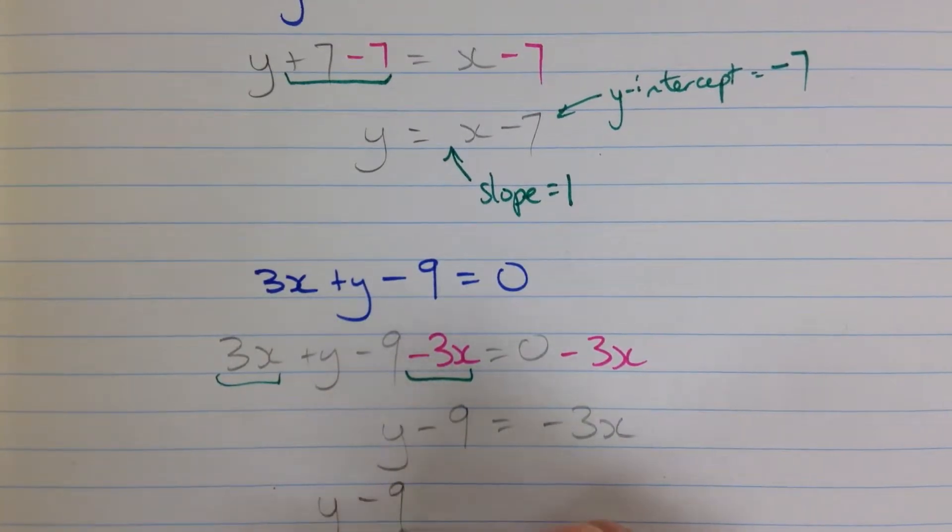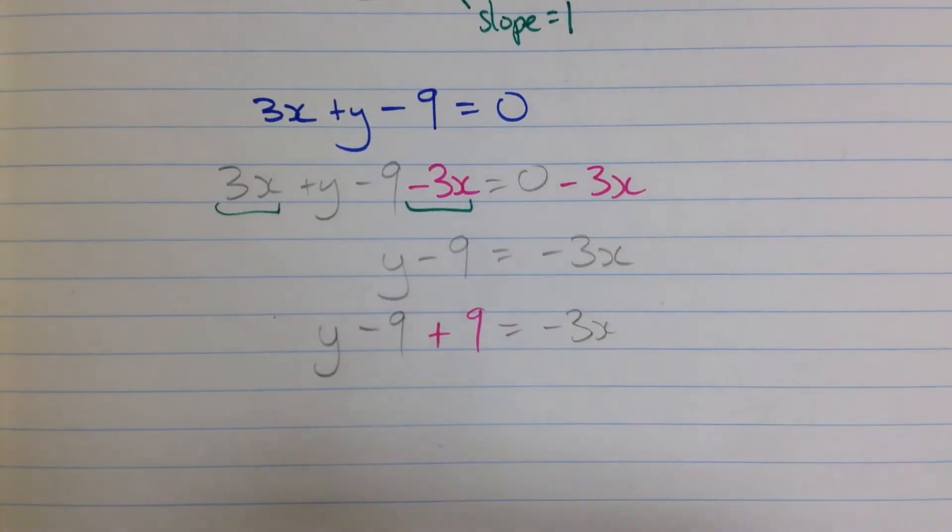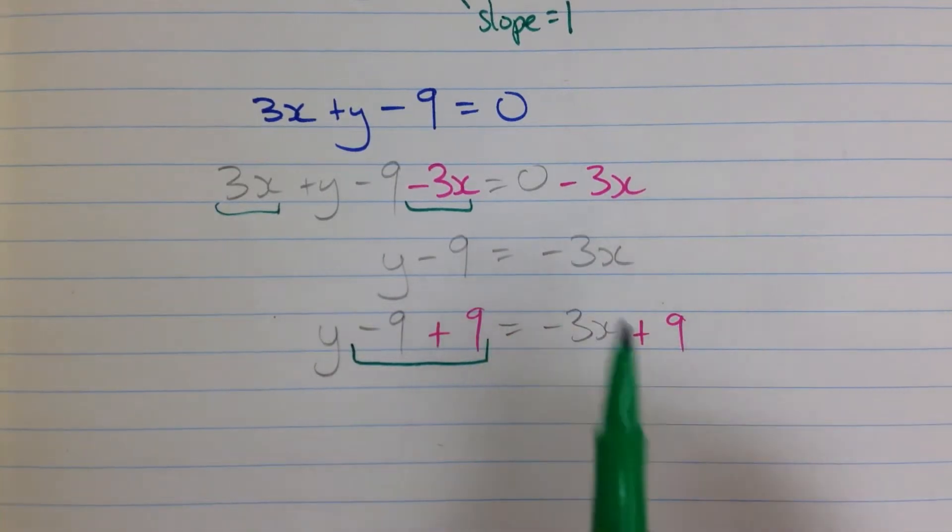Well, to get rid of that, we are going to add 9 to both sides of our equation. There's a plus 9, and there's a plus 9. Because I've done it to both sides, the equation is still valid. This is 0.